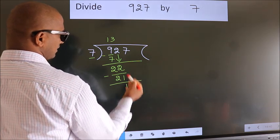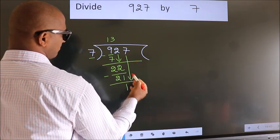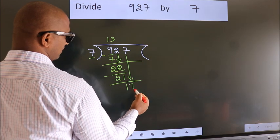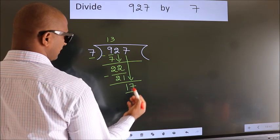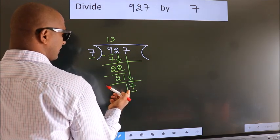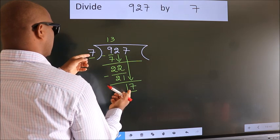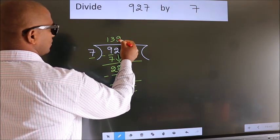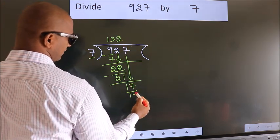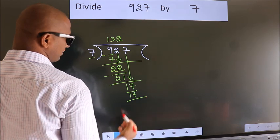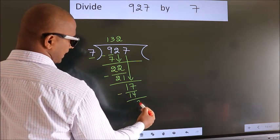After this, bring down the next number. 7 down, so 17. A number close to 17 in the 7 table is 7 twos, 14. Now we subtract. We get 3.